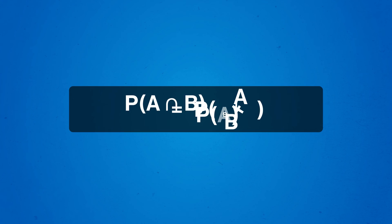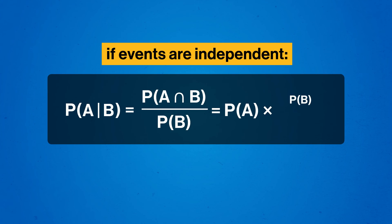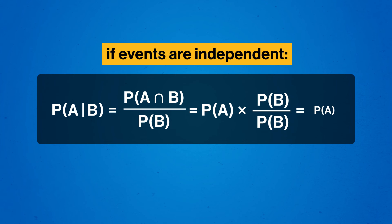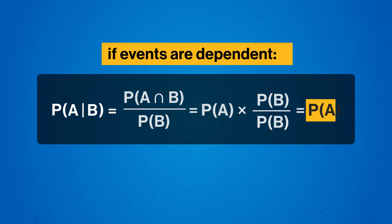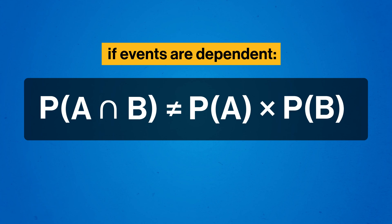With a bit of algebra and using our formulas from earlier, conditional probabilities help us explicitly define dependence and independence with math. If the events are independent, then the conditional probability for one event, given that some other thing happens, is just the probability of that one event — the second event doesn't matter. But if the events do depend on each other, then the conditional probability will be different from the probability of just the single event. So mathematically, two events are dependent if the probability they both happen is not equal to the probability of one outcome multiplied by the other.